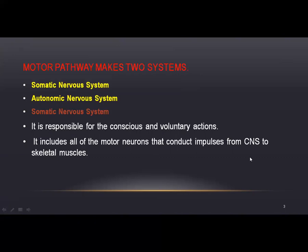The motor neurons conduct impulses from the central nervous system to skeletal muscles. The skeletal muscles and their movement will be controlled by voluntary action. In the somatic nervous system, voluntary action controls the body through skeletal muscles.